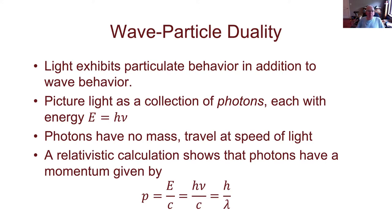To recap from last time's discussion of the photoelectric effect: light exhibits both particulate and wave behavior. Light, which folks started off thinking of as a wave, has situations where we need to describe it as a collection of little chunks of energy — light particles. We call those particles of light photons, and say they have an energy h-nu.